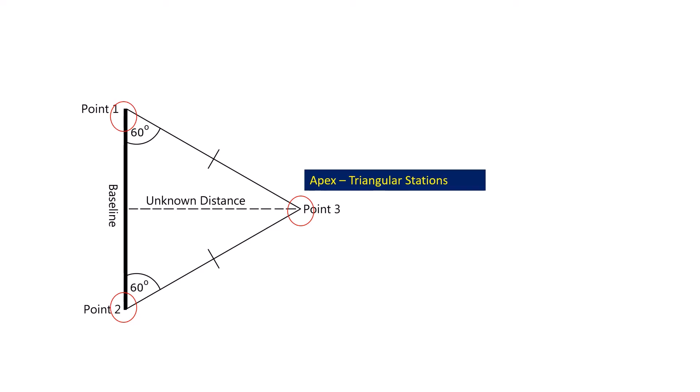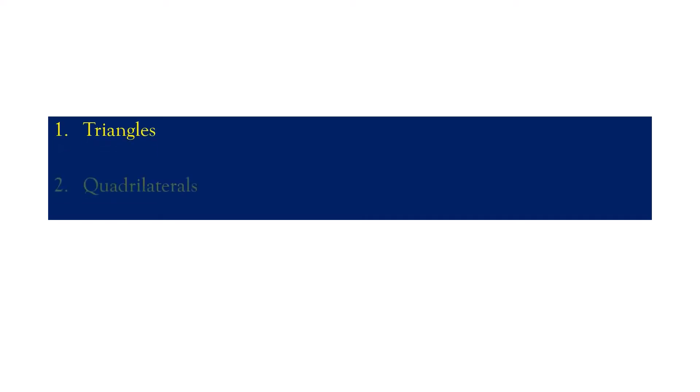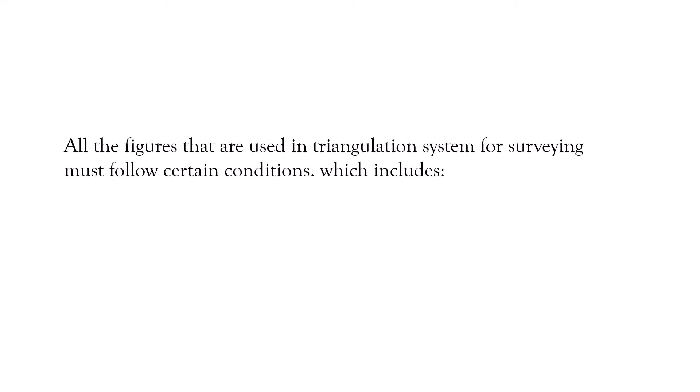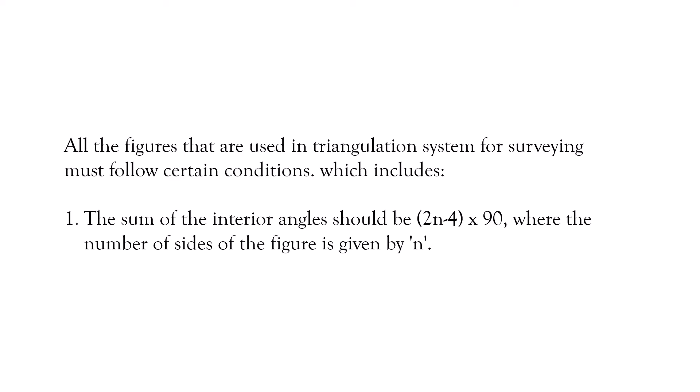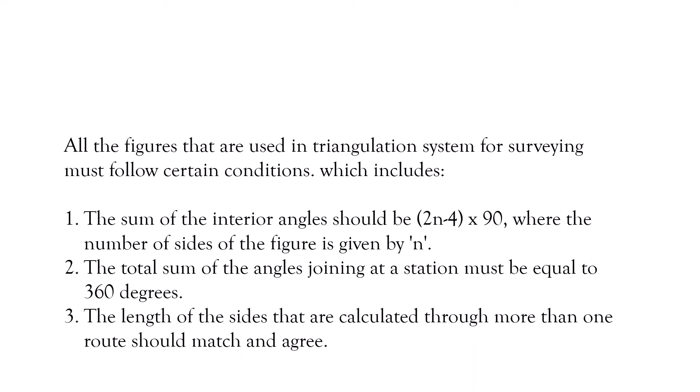Now, the figures used for a triangulation system can be either triangles, quadrilaterals, or polygons. All figures used in triangulation system for surveying must follow certain conditions: The sum of the interior angles should be 2n-4 into 90, where n is the number of sides of the figure. The total sum of the angles joining at a station must equal 360 degrees. The length of sides calculated through more than one route should match and agree to this.